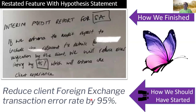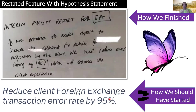In retrospect, we should have actually started with the outcome: reduce the foreign exchange transaction error rate by 95%. No one in the room, including myself, thought of any other options besides updating the audit report. Maybe there was a better way, but we all acted like cogs in the machine. You generally want to start with a problem before you get into solution mode. Most times things come through already framed as solutions.